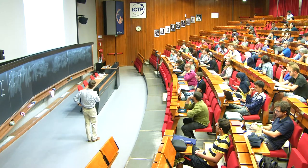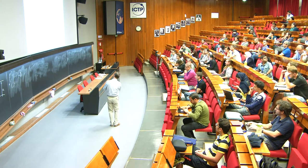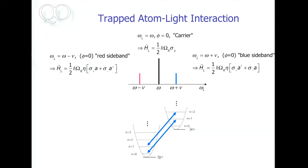The anti-Jaynes-Cummings Hamiltonian describes the case where you create an excitation in your qubit and at the same time create an excitation in your harmonic oscillator. You go, for instance, from ground state G with zero excitation to excited state E with one excitation of the harmonic oscillator. The reverse is always also possible — you lose one excitation in your atom and also lose excitation in the harmonic oscillator. This is a Hamiltonian with unitary time evolution.